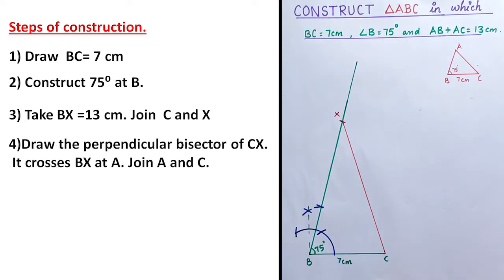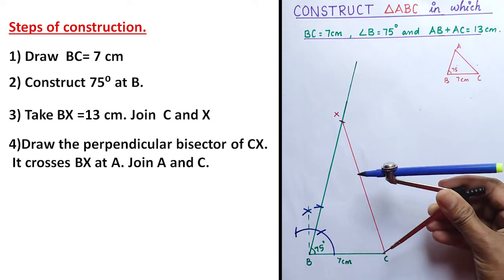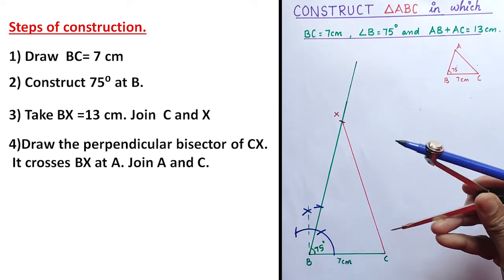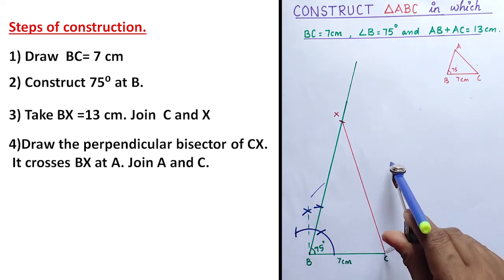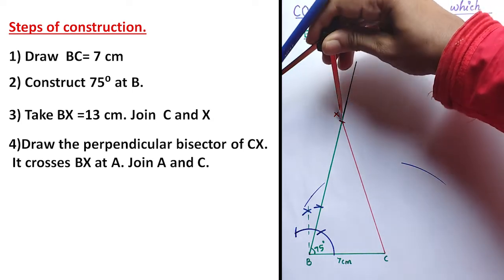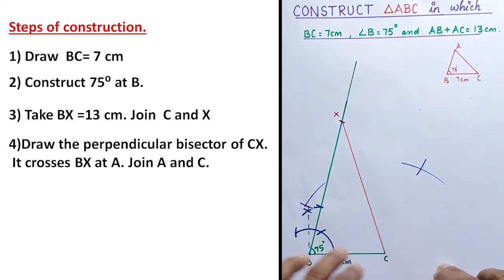Then join X and C. We have to bisect CX — you know how to construct the perpendicular bisector. Place the metal tip on C and take more than half of XC. Place the metal tip on C, draw an arc on the left of line CX and another on the right, then place the metal tip on X.